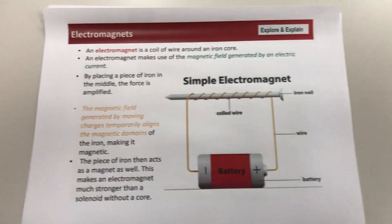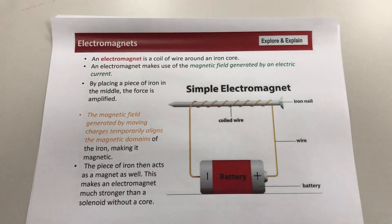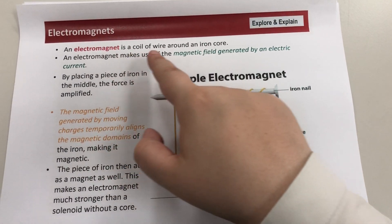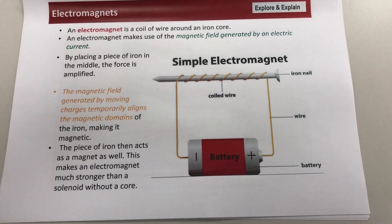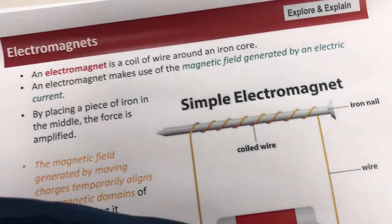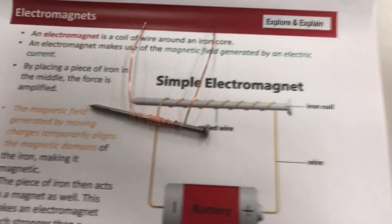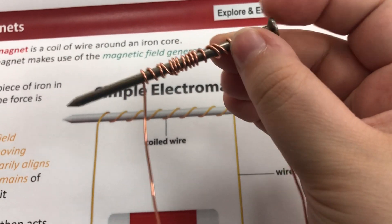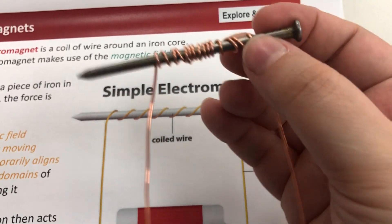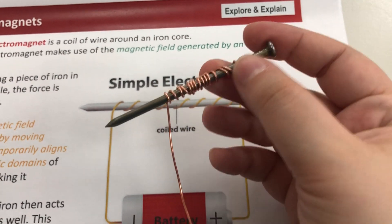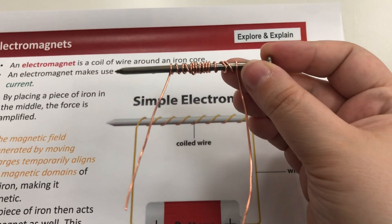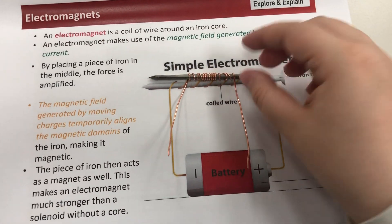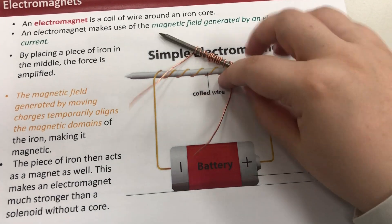In this video we're going to show what an electromagnet is. An electromagnet is a coil of wire around an iron core. This is an iron nail — remember from the lesson on magnets that iron is a ferromagnetic material. Ferromagnetic materials have domains that can align and become a temporary magnet.